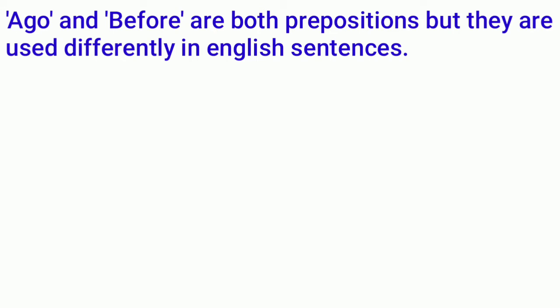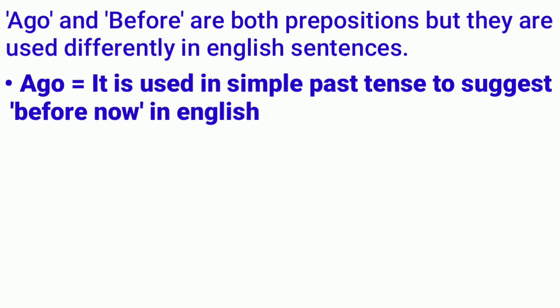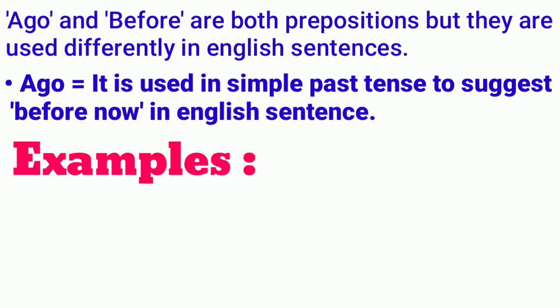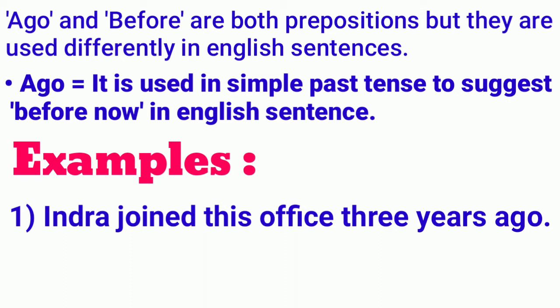Ago and before are both prepositions but they are used differently in English sentences. Ago is used in simple past tense to suggest before now. So the preposition ago is used in simple past tense to suggest before now. For example: Indra joined this office three years ago.